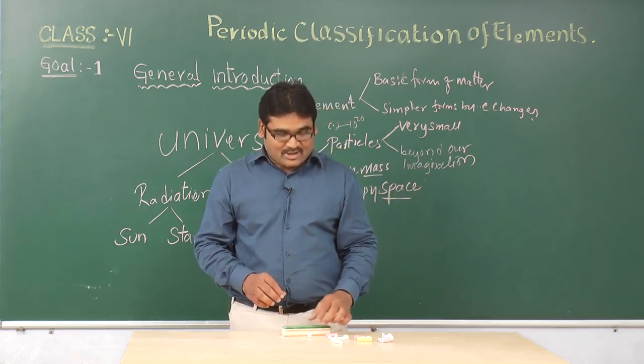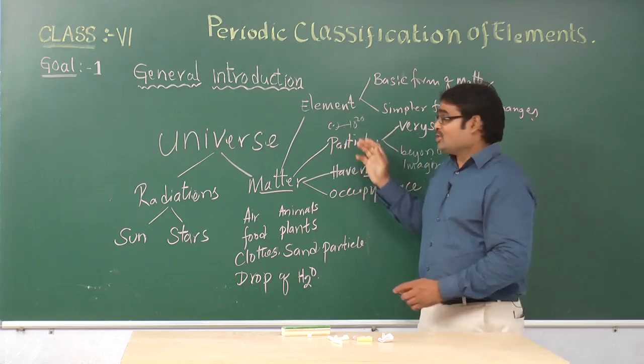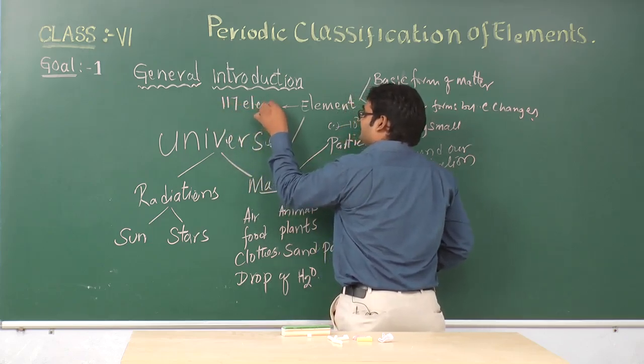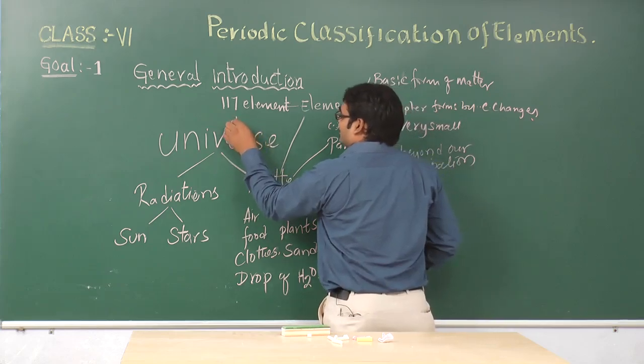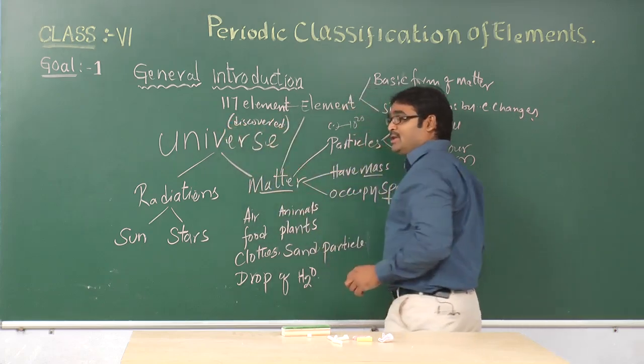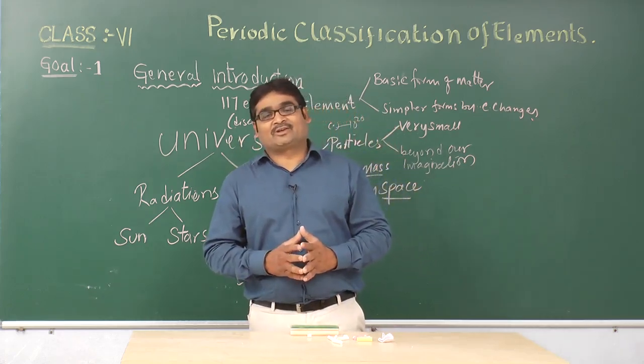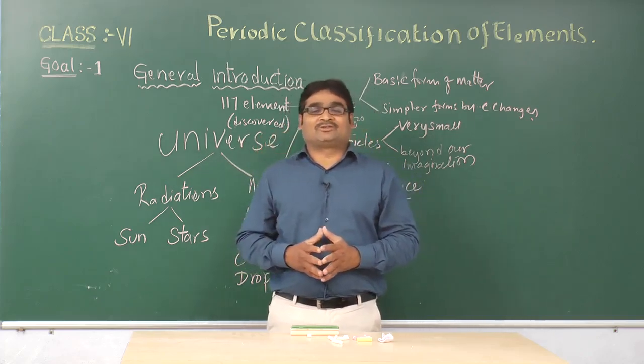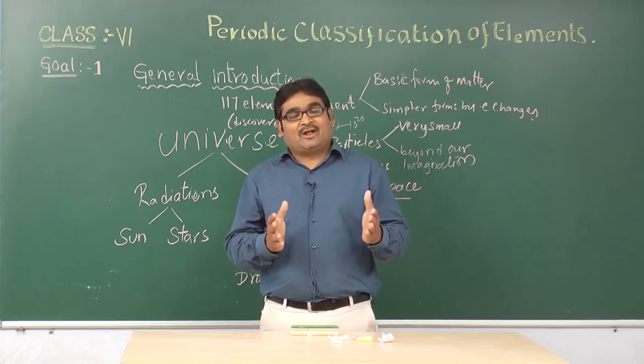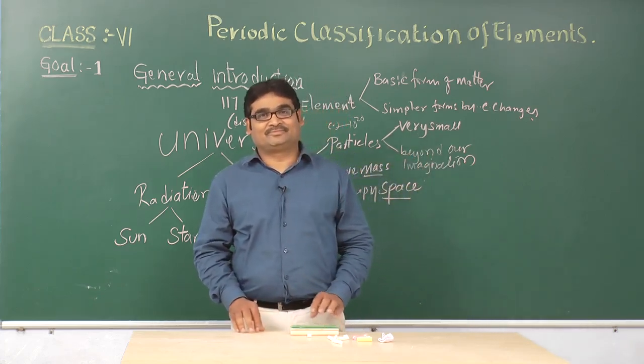So as the days are going on, and the people, the scientists are more interested in the elements. So as of now, there are now 117 elements that are so far discovered, 117 elements are so far discovered. So this is the general introduction of goal 1 for the periodic classification of the element. In the next goal, we will see how these elements are being classified, under what conditions or on what basis they are being classified. Have a nice day. Thank you.